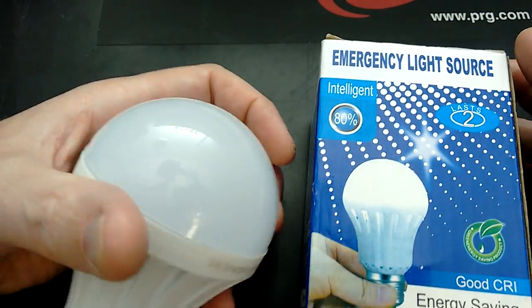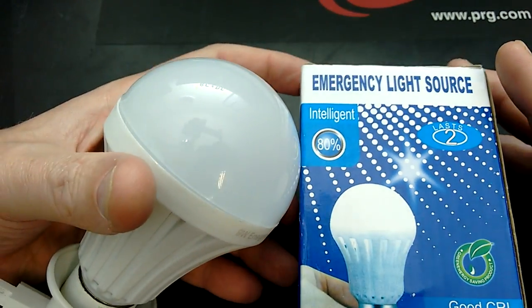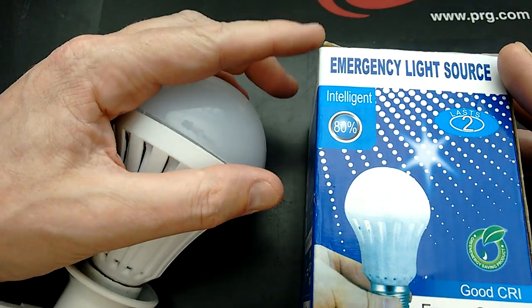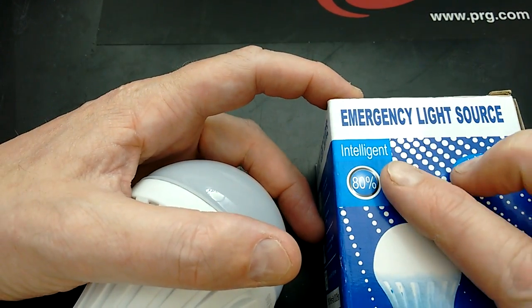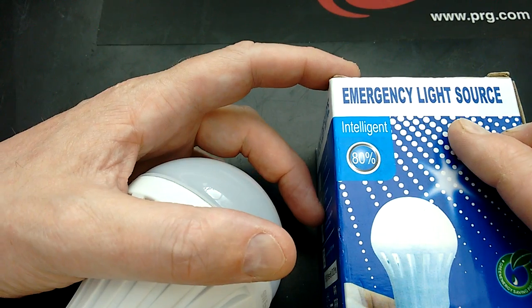This is quite an interesting device. It's a lamp that doubles up as an emergency light and it came off eBay. Well, this one actually came directly from China, but you can get them on eBay if you do a search for Intelligent Emergency Light E27.